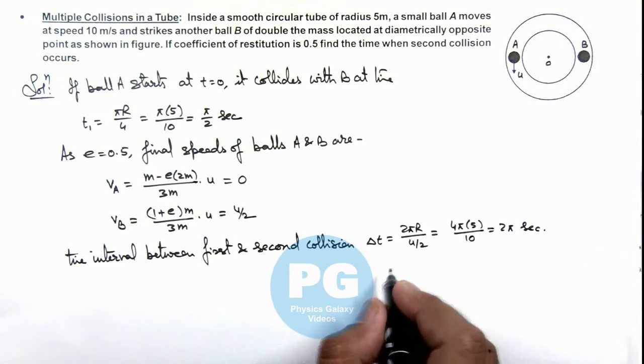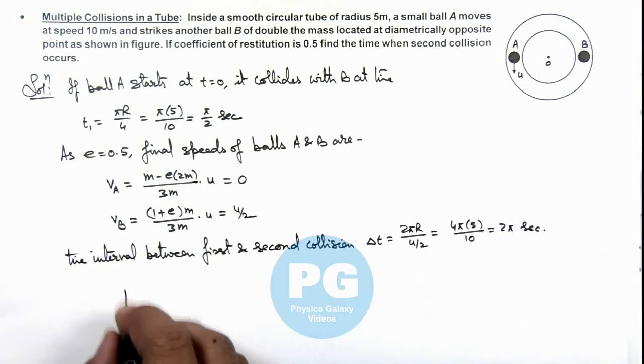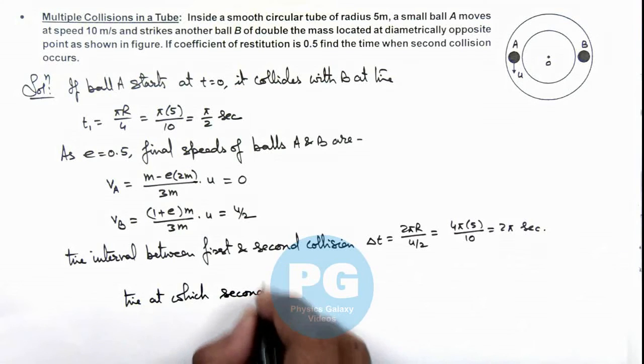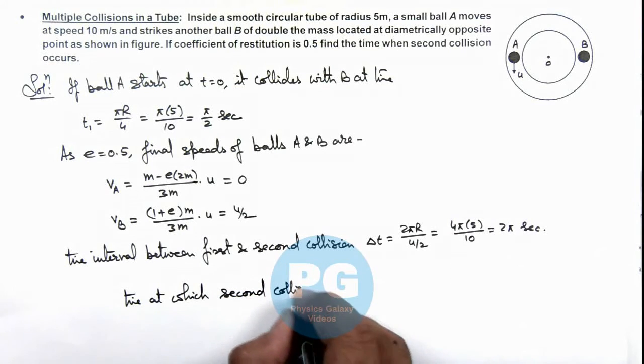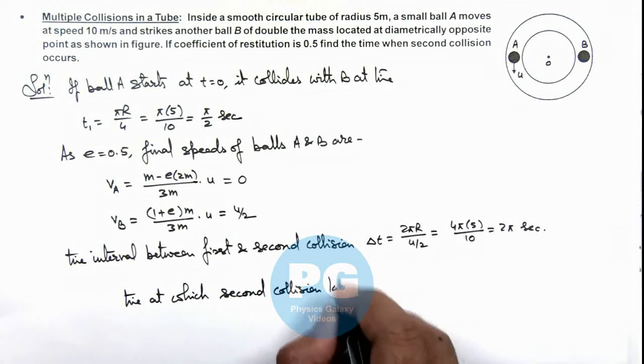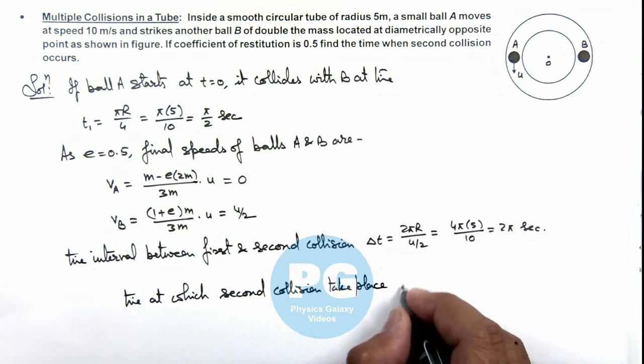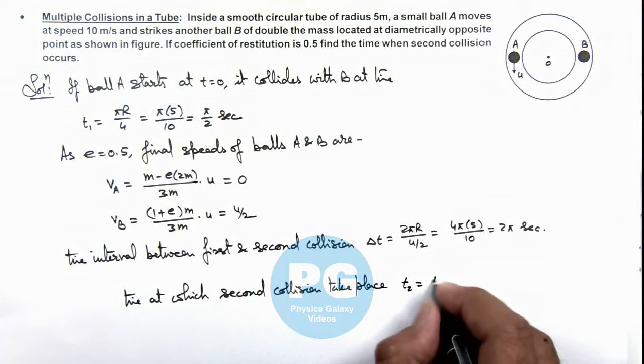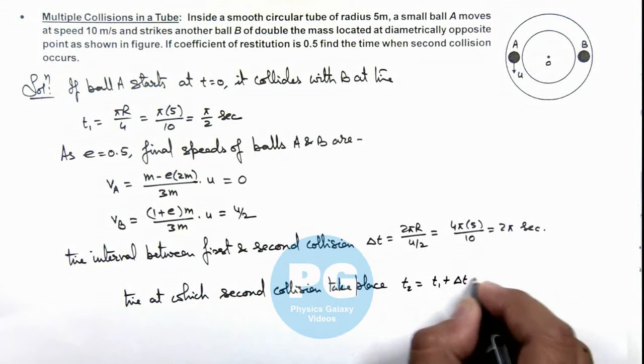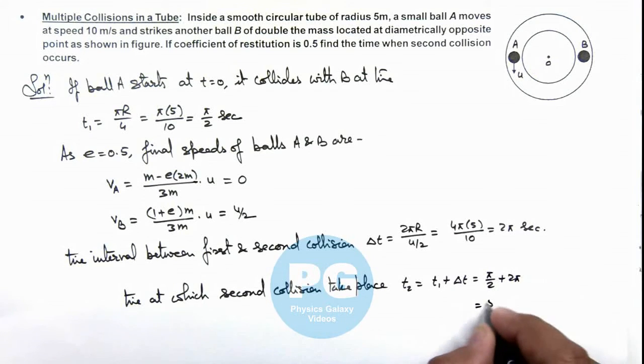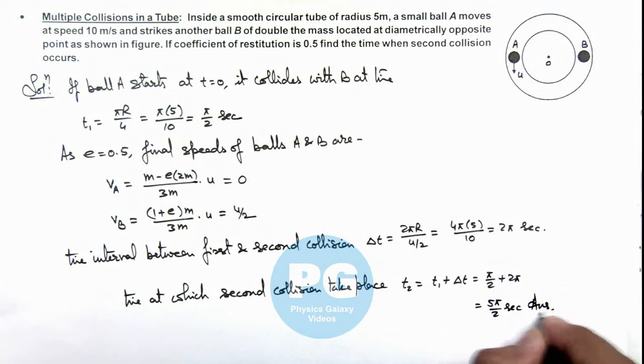In this situation we can calculate the time at which second collision takes place, which can be given as t2, equal to t1 plus delta t. So this is π by 2 plus 2π, which equals 5π by 2 seconds. That is the answer for this problem.